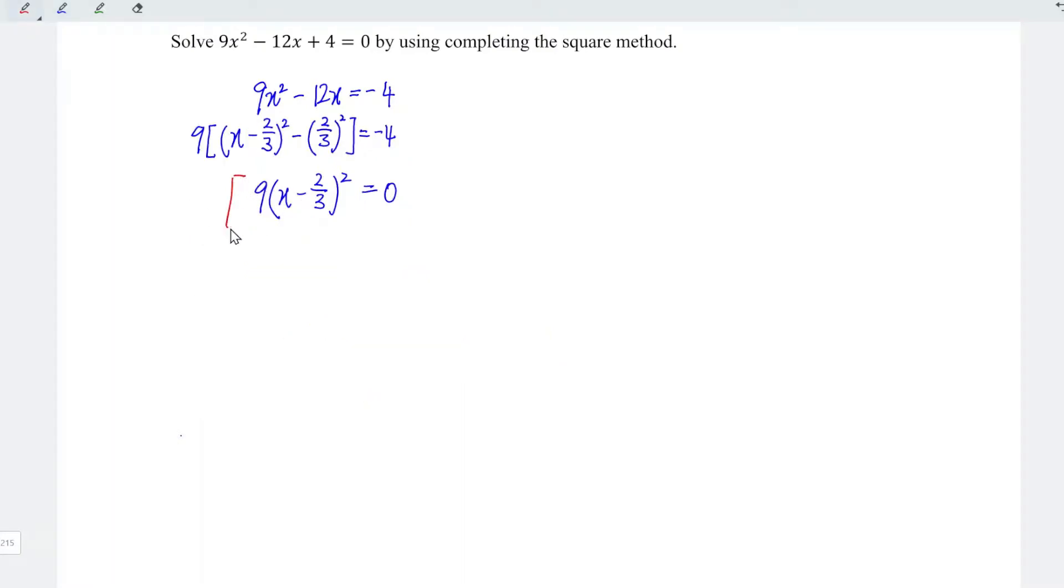Next, divide the entire equation by 9. 9/9 = 1. So 1 times anything, we get back the same thing. This means we have (x - 2/3)² = 0 divided by 9 is still 0.